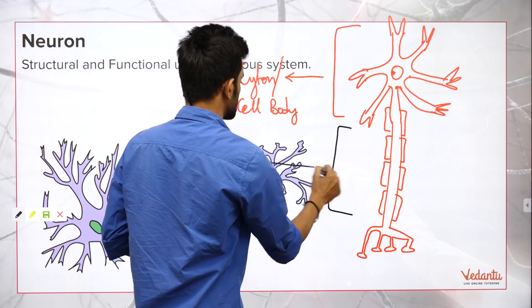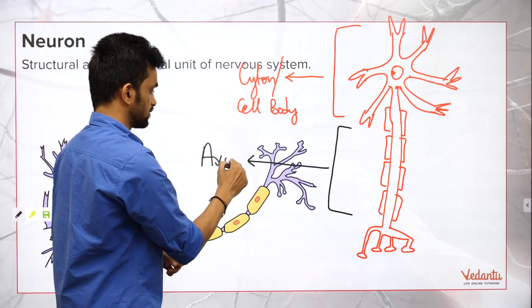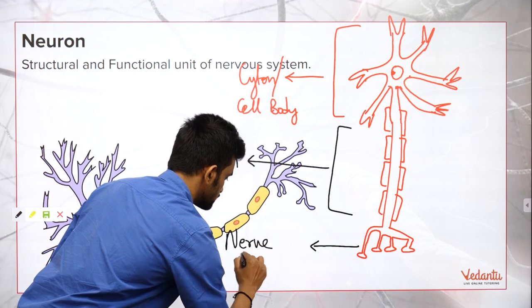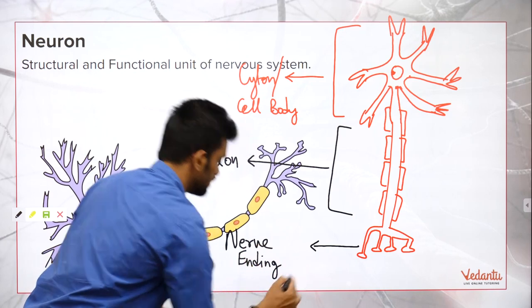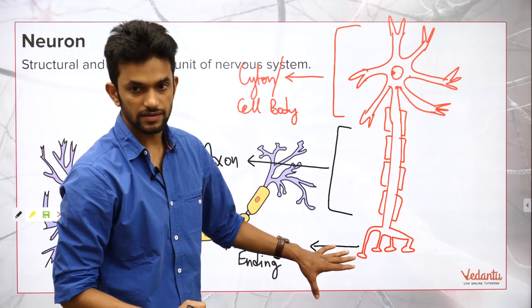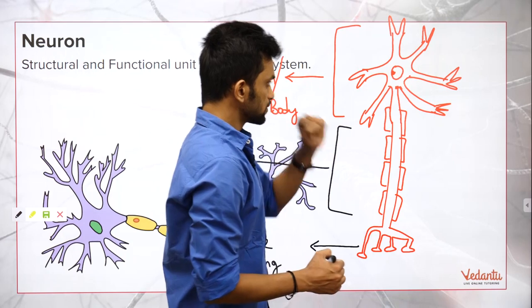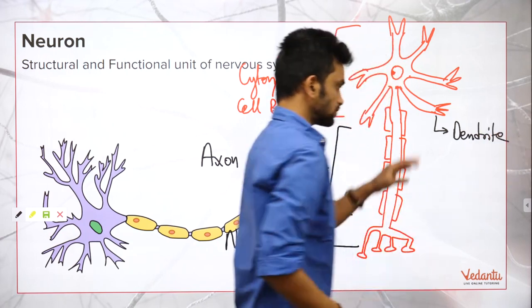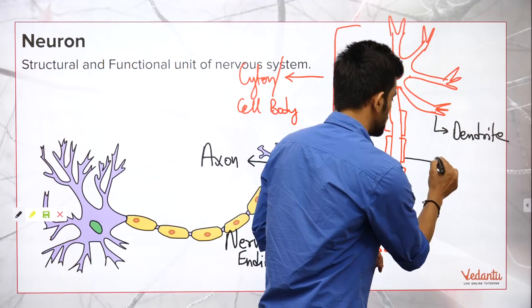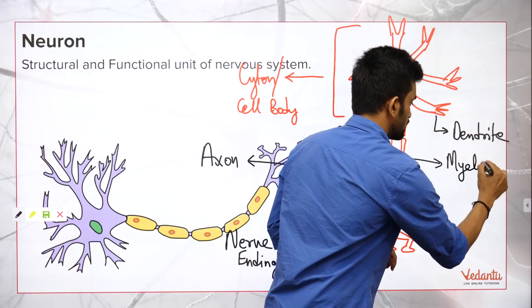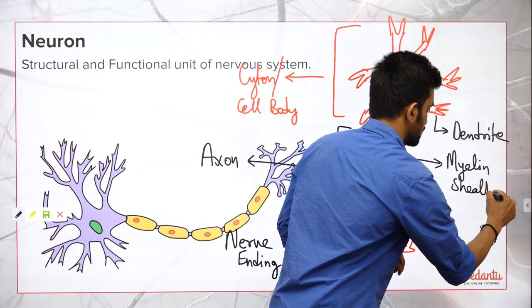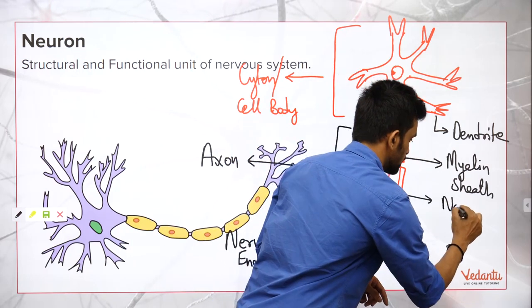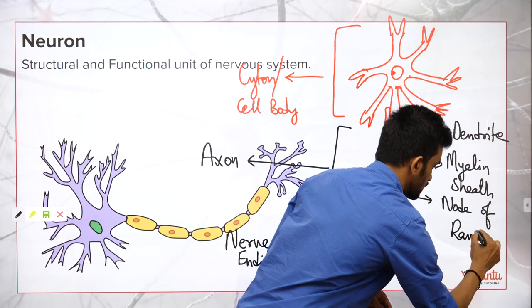This region starting from here is called the axon. This region at the end is called the nerve ending. In the cytone, we have finger-like projections called dendrites. We have sheaths over here called the myelin sheath. In between the myelin sheath we have gaps called the nodes of Ranvier.